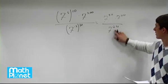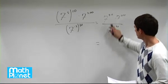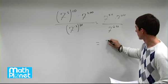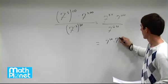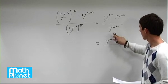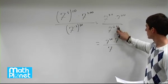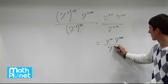Let's simplify this a little bit more by multiplying these out. 5 times 10 is 50, so we have 7 to the power of 50. We have 7 to the power of 200. And then under here we have 7 to the power of negative 2 times 30. Negative 2 times 30 is negative 60.